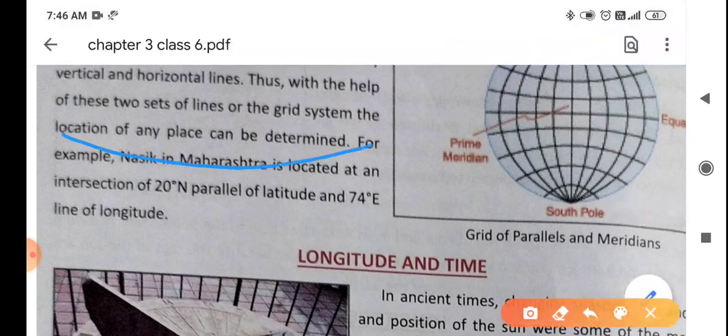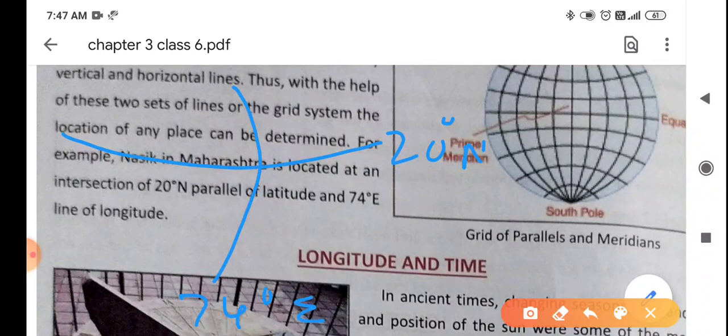How? This is 20 degree north longitude, and the parallel of latitude is 74 degree east. So where they intersect, this area, where they touch each other, this area is Nasik.